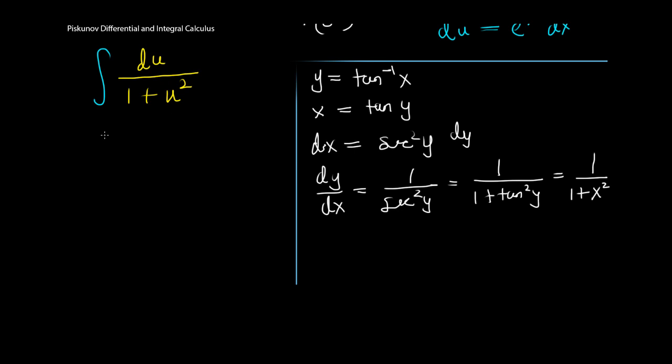This is just the integral of 1 over (1 + u^2) du. That doesn't change things much. This is just tan^(-1)(u) instead of tan^(-1)(x), and we add a constant.